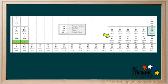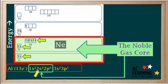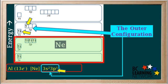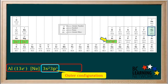Now we'll look at the next element, number 13, aluminum, with 13 electrons. Its highest energy electron goes into the 3p orbital, so its configuration is 1s2, 2s2, 2p6, 3s2, 3p1. We isolate the noble gas core of aluminum — which is 1s2, 2s2, 2p6, the configuration for a neutral atom of neon — and replace this with [Ne] in square brackets. Aluminum's outer configuration is 3s2, 3p1. The noble gas core is [Ne] and the outer configuration is 3s2, 3p1, which we show in aluminum's box on the periodic table.